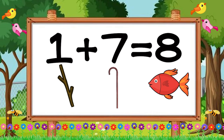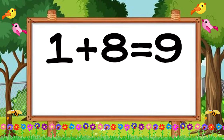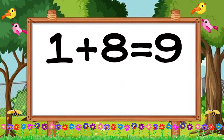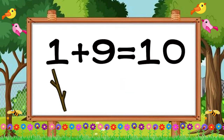And we're going to add one plus eight. One like a stick and eight like a fish. One plus eight is equal to nine. Nine like a head and neck. Yes, class. And finally, we're going to add one like a stick plus nine like a head and neck. It will give us ten.